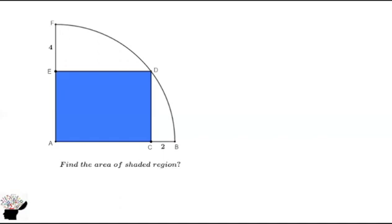In the question we are supposed to find the area of the shaded region. Now we have the distance from E to F to be 4, and the distance from C to B to be 2. How can we find the area of the shaded portion?